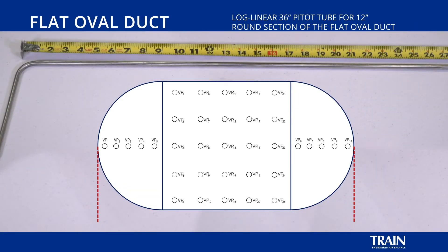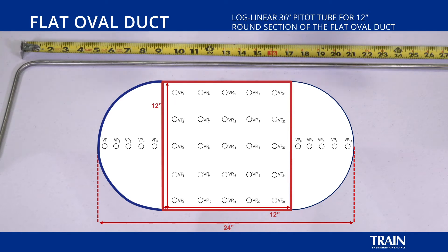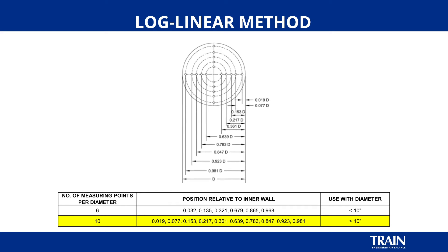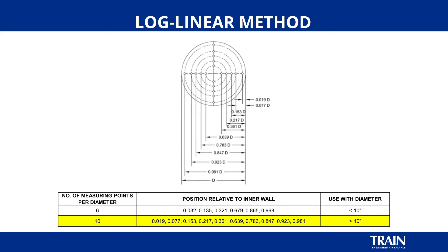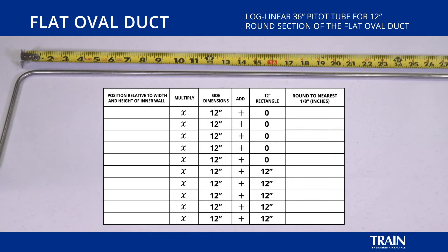Next, we will be performing the log linear portion of the flat oval traverse. This is a 24 inch wide by 12 inch tall flat oval duct, and we will be performing the log linear traverse from one side of the duct. We will need to make our markings for the circular portion of the duct on the first half of the pitot tube, and then account for the 12 inches of rectangular duct work, and then finish up with the last circular log linear measurements. In order to mark our pitot tube for this traverse, we will be using the log linear chart and method, which indicates ten factors to multiply by the diameter of the ductwork. The first factor for the log linear method for the 12 inch circular portion is 0.019, which results in one quarter inch on our pitot tube.